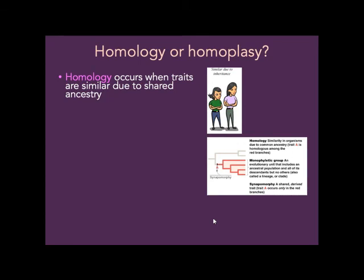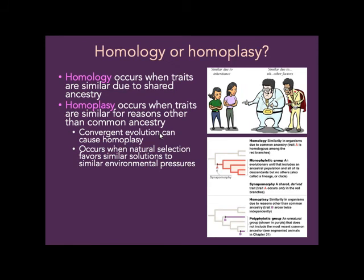Let's talk about homology versus homoplasy. Homology is when traits are similar due to shared ancestry — like two women who look similar because they share a common relative. Homoplasy occurs when traits are similar for reasons other than common ancestry — like two Elvis impersonators who look similar but aren't related. You can get homoplasy through convergent evolution, when two very different lineages both adapt to live in the same environment and end up looking similar.